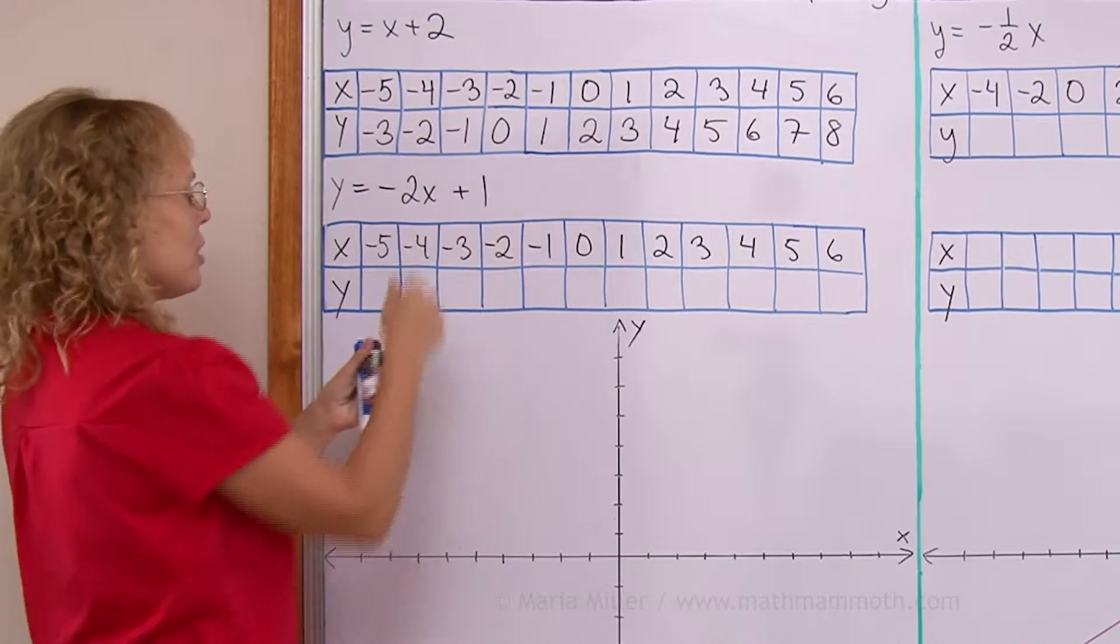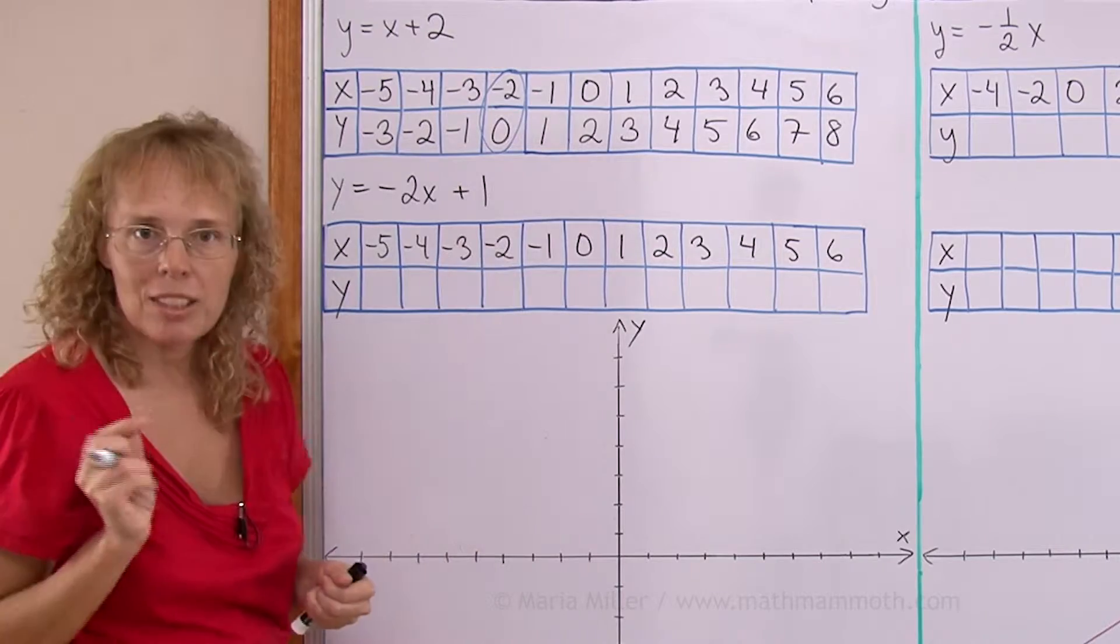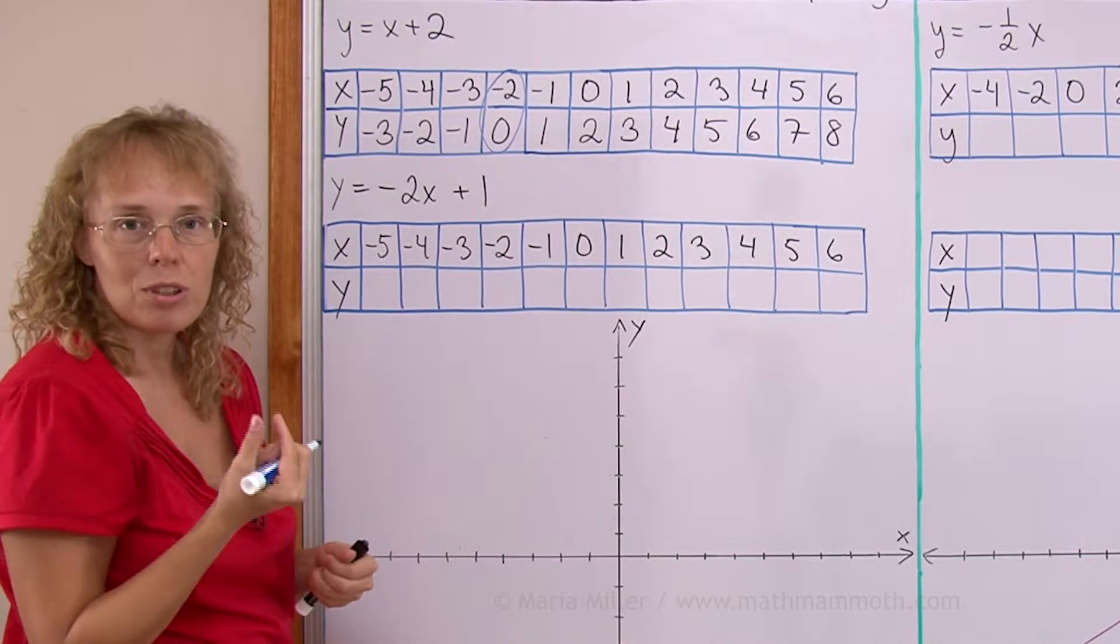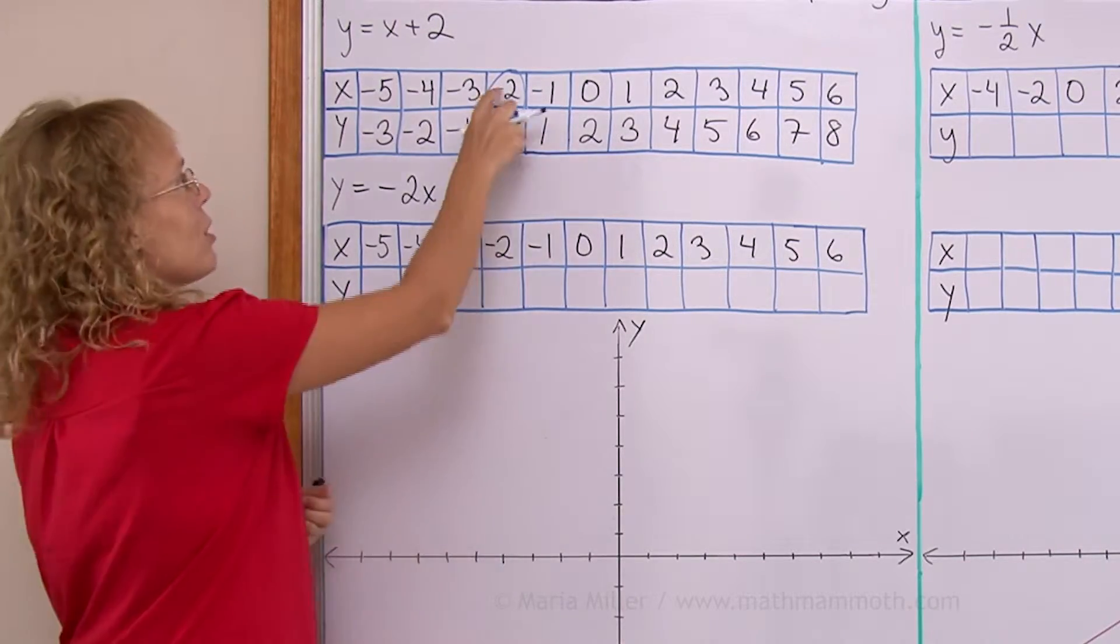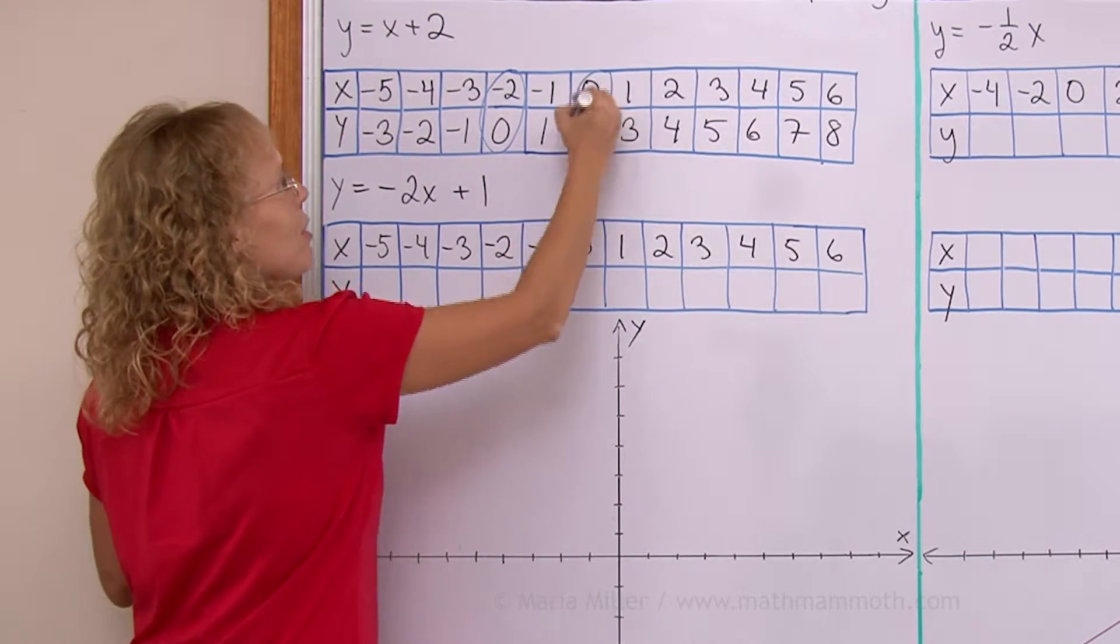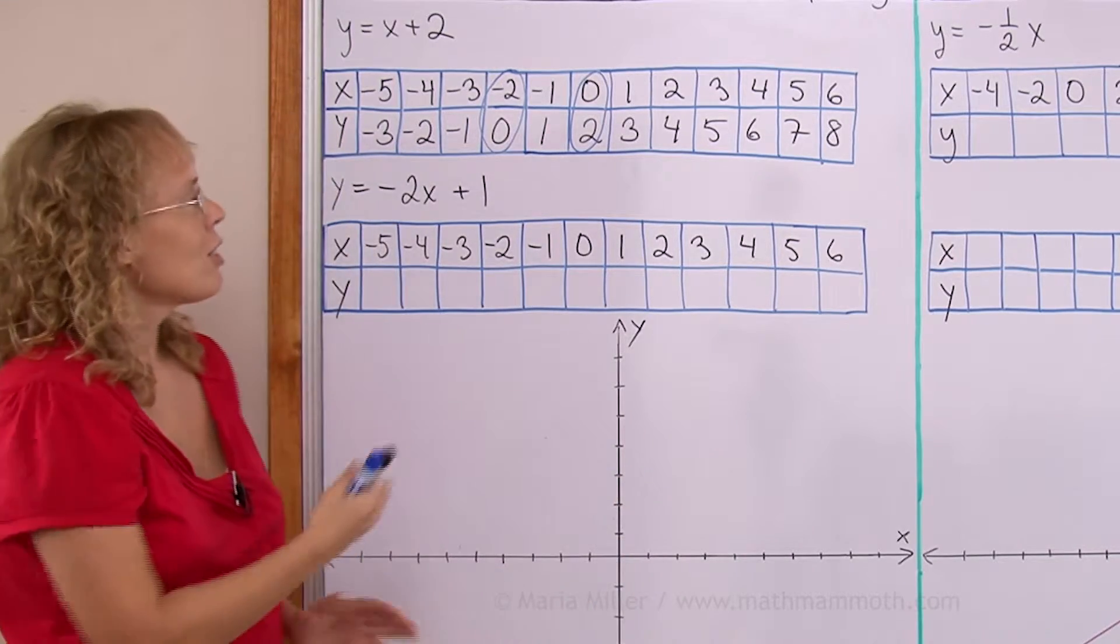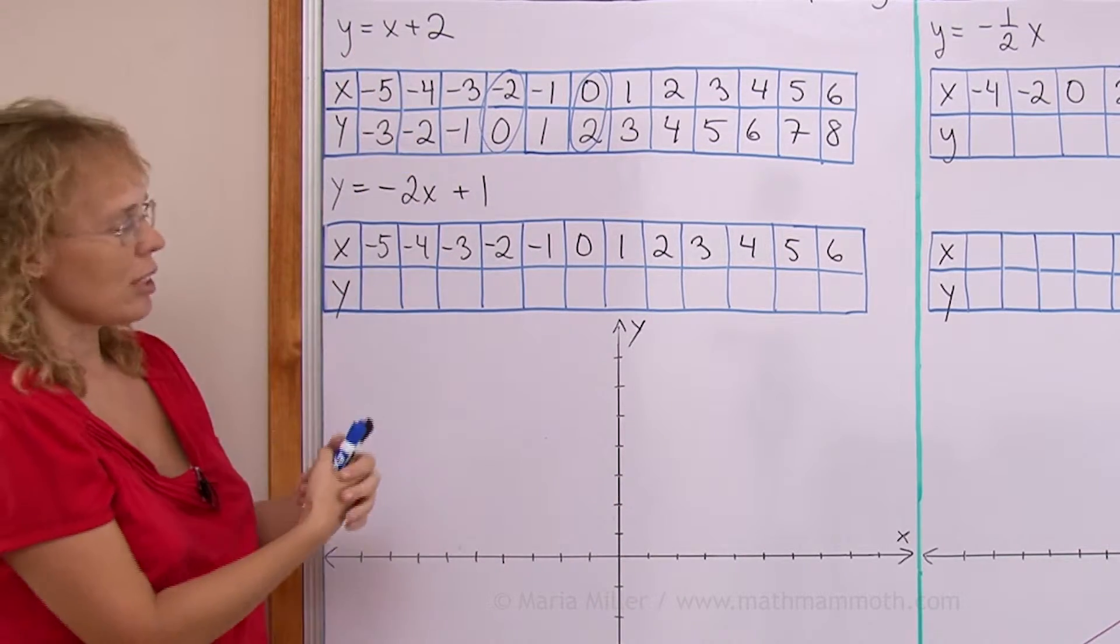Now, of course, each one of these is now one point in the coordinate plane because it is an ordered pair. It is a pair of numbers, x coordinate and y coordinate. So each one of these is one point. I can now plot the points here to make a graph for the solution set of this equation.